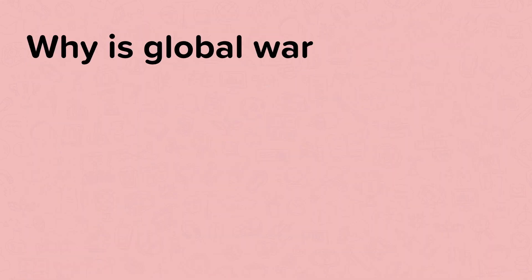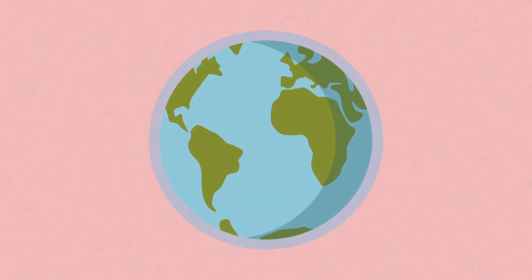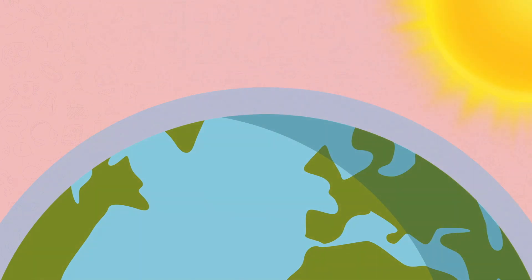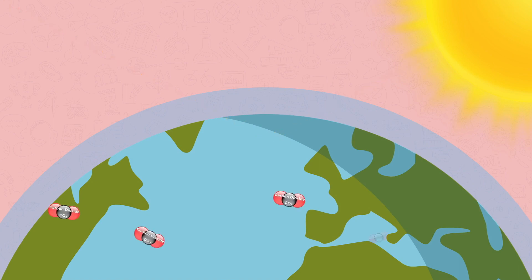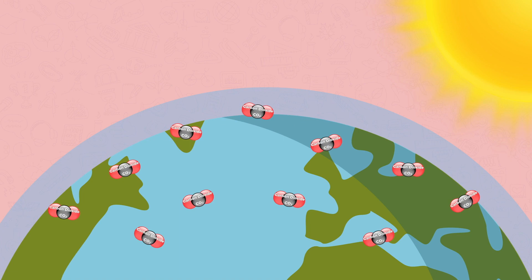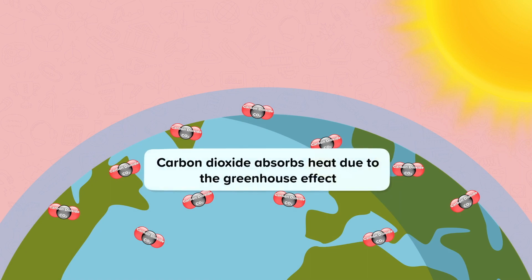Why is global warming happening? Our planet receives large amounts of solar radiation that heats and lights us from the sun. Sunlight naturally reflects off of the Earth, removing a lot of energy. However, CO2 in the atmosphere absorbs sunlight. If there is more CO2, more energy will be absorbed. This absorbed energy stays on Earth as heat energy. The CO2 is like insulation, keeping the Earth warmer by preventing some of the sun's heat from escaping. Over time, this increase in heat can cause global warming — an overall increase in the temperature of climates over time.